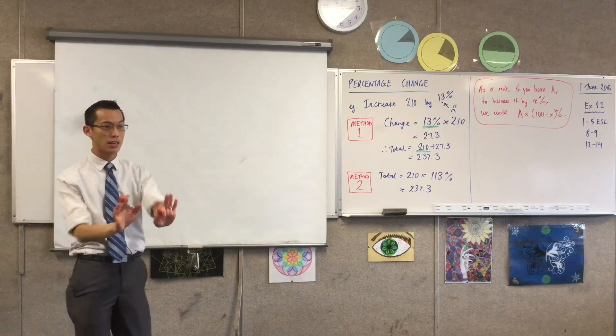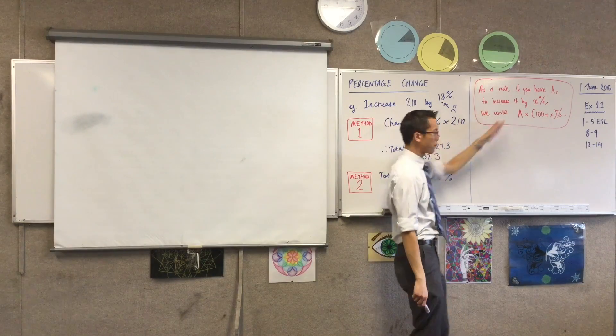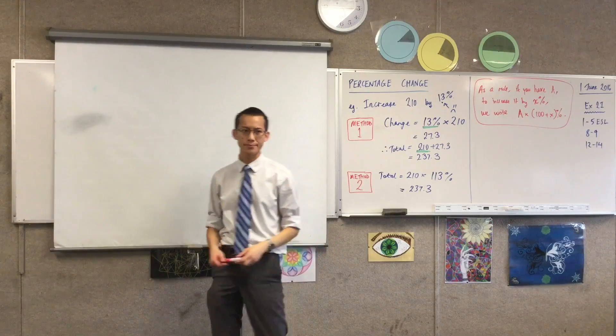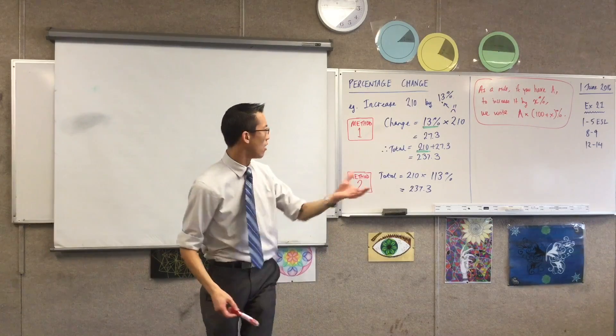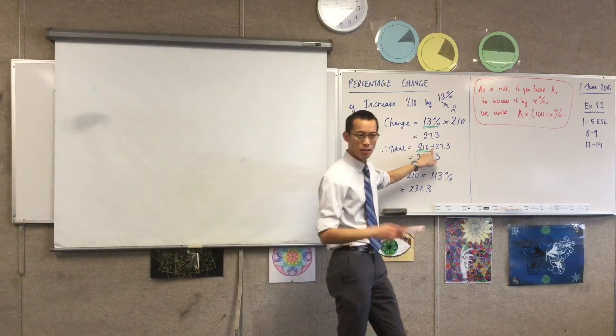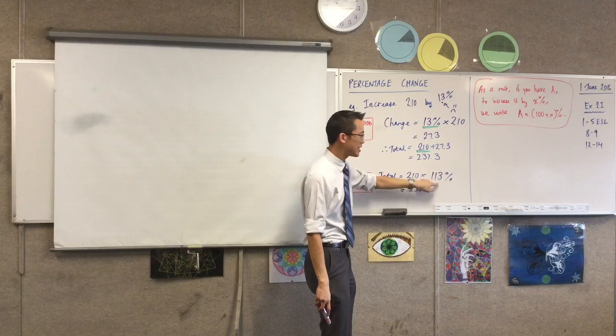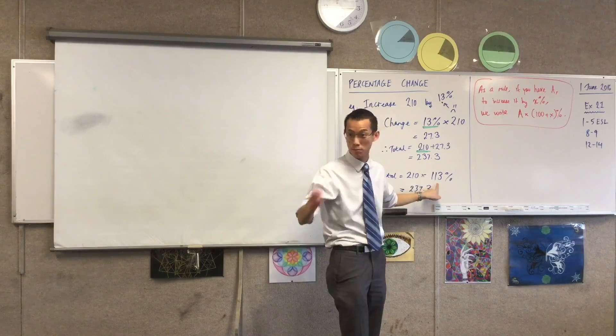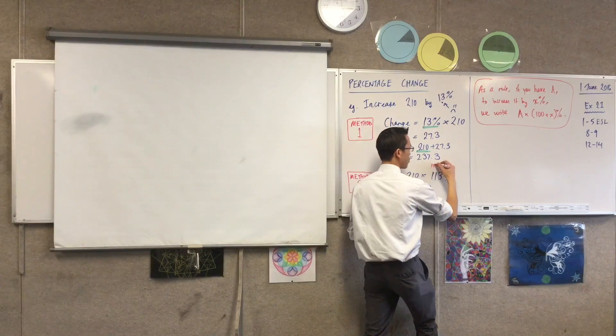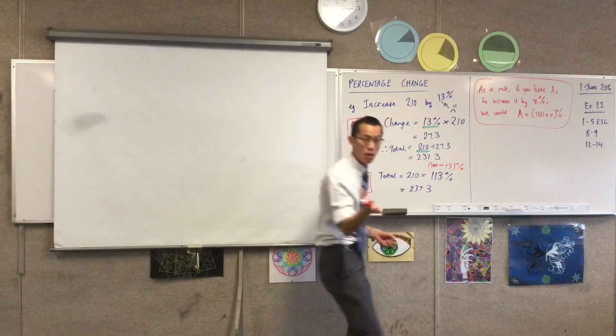In just the same way, I don't think we need an example. If I changed everything to decrease. Suppose I wanted to decrease 210 by 13%. What would be different? Instead of, oh cool, here's the amount, let's add it. I'm going to say, here's the amount, let's subtract. So this would turn into a minus sign, which would mean that down here, instead of 100 and 13, 100 plus 13, what would this number be? It's going to be 87, because it would be 100, take away 13, and that would give me the number I'm after.